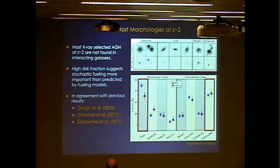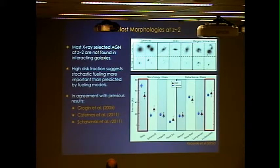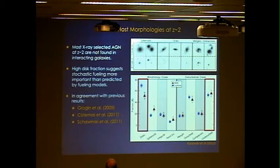This is in great agreement with previous studies that have looked at the morphologies of AGN hosts and found no significant difference between galaxies with growing black holes and normal galaxies, but it is in significant disagreement with the Hopkins and Herquist 2006 AGN fueling models.